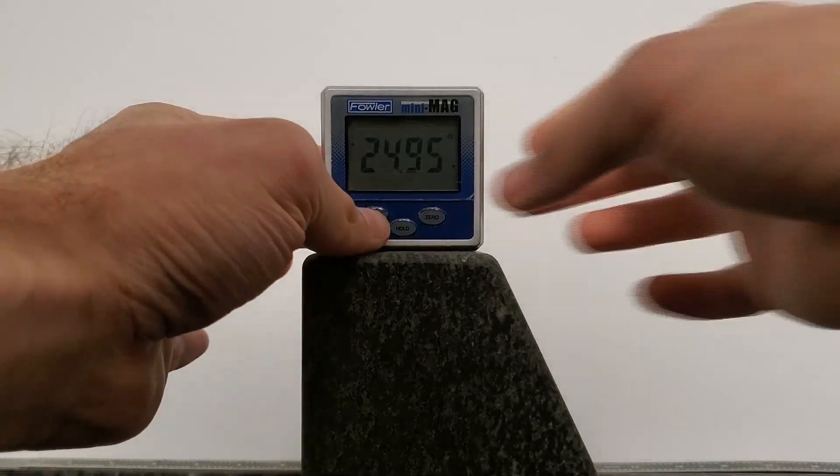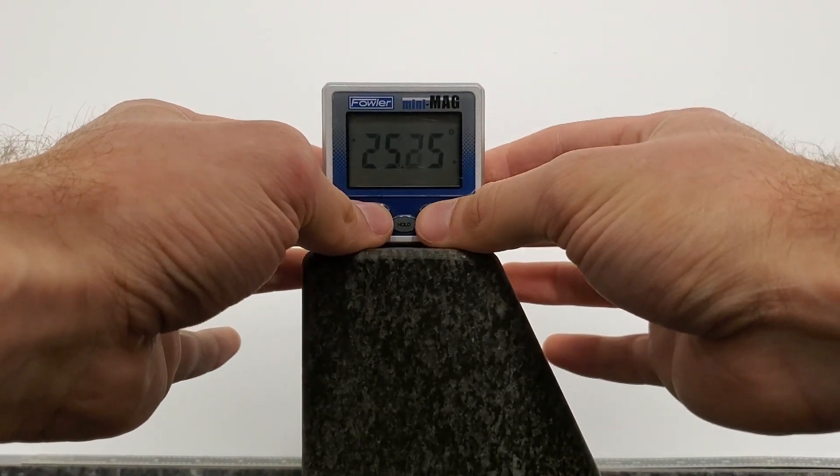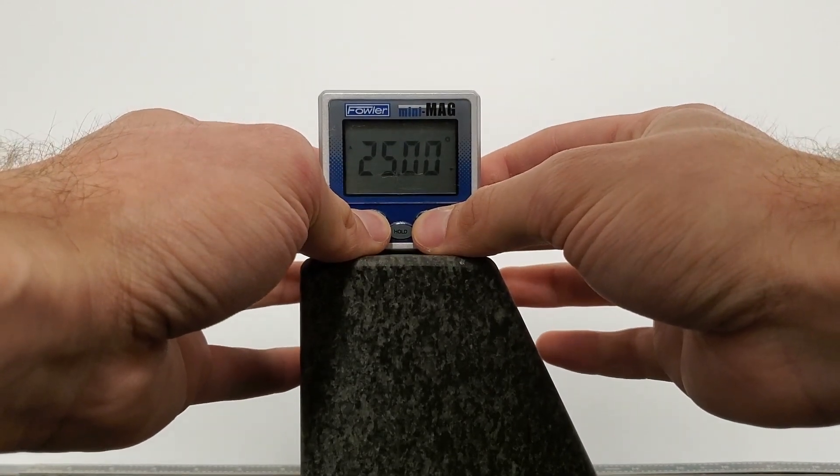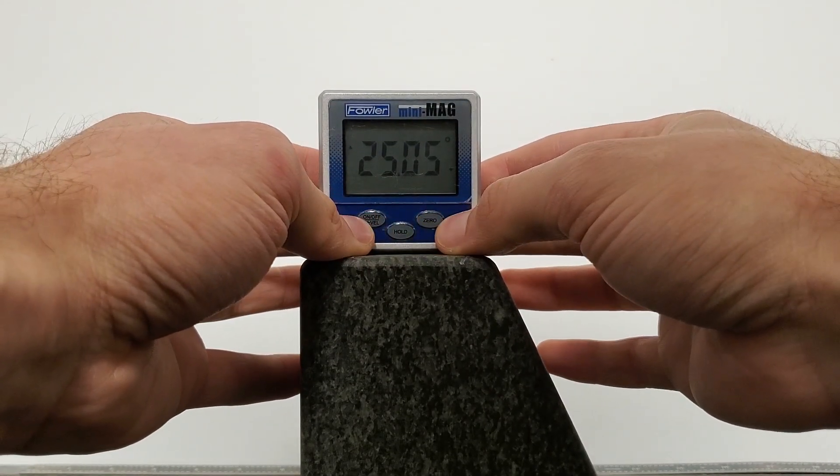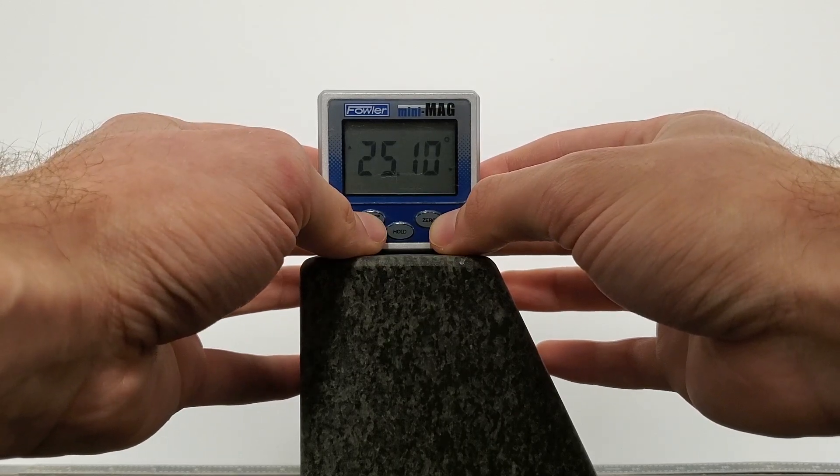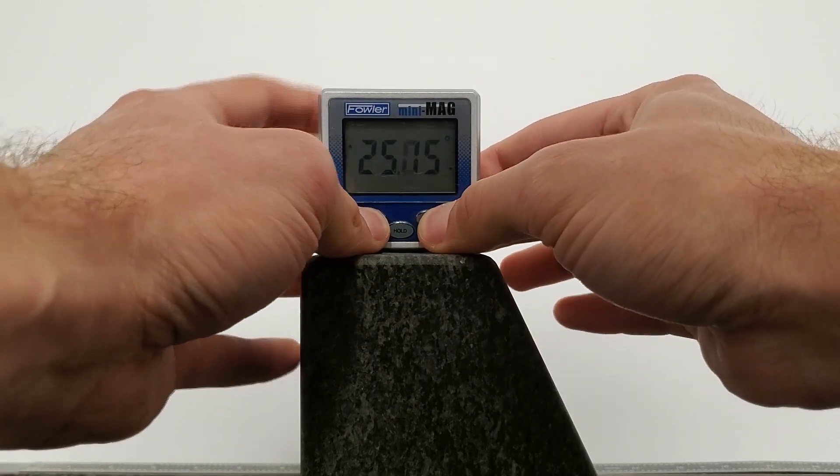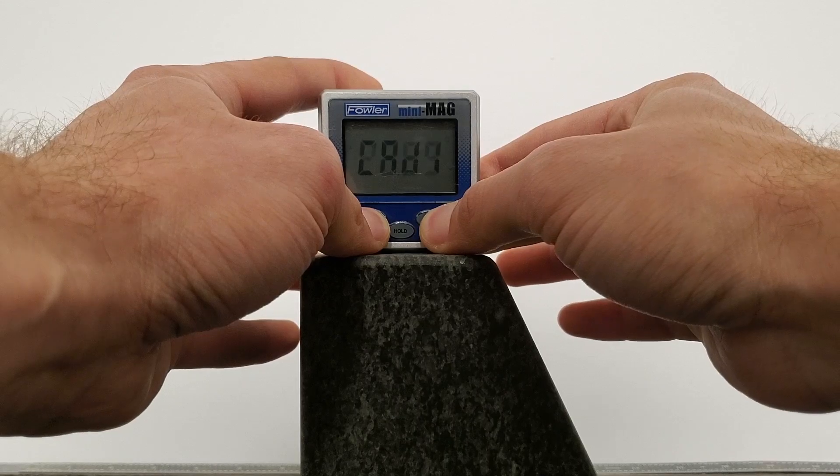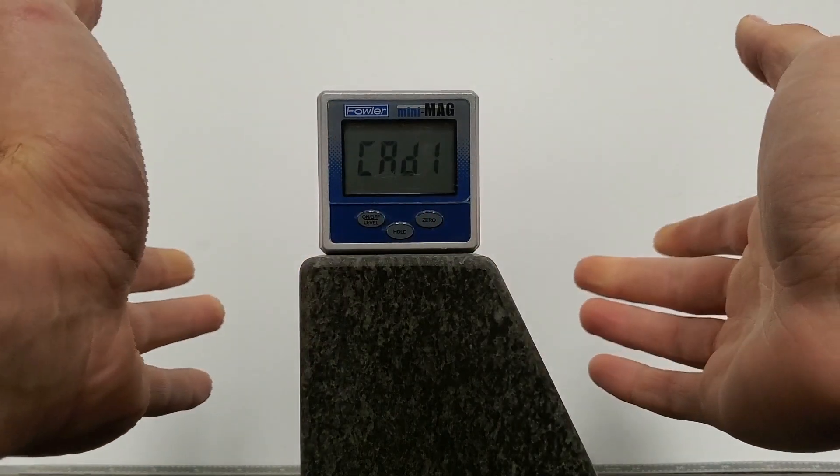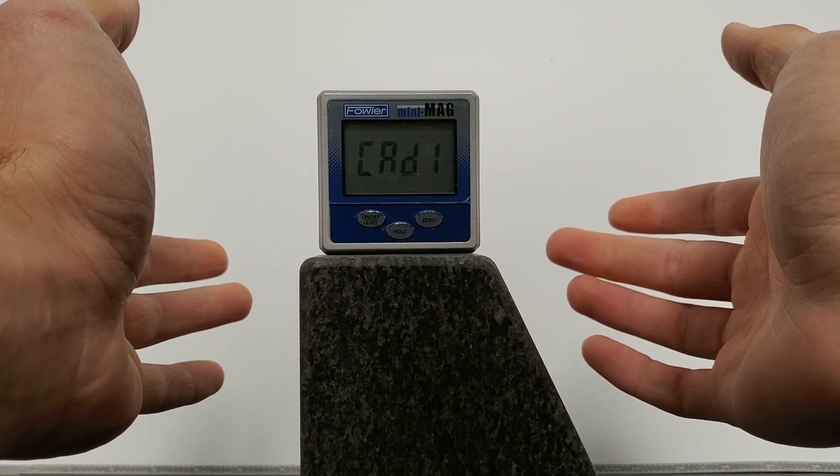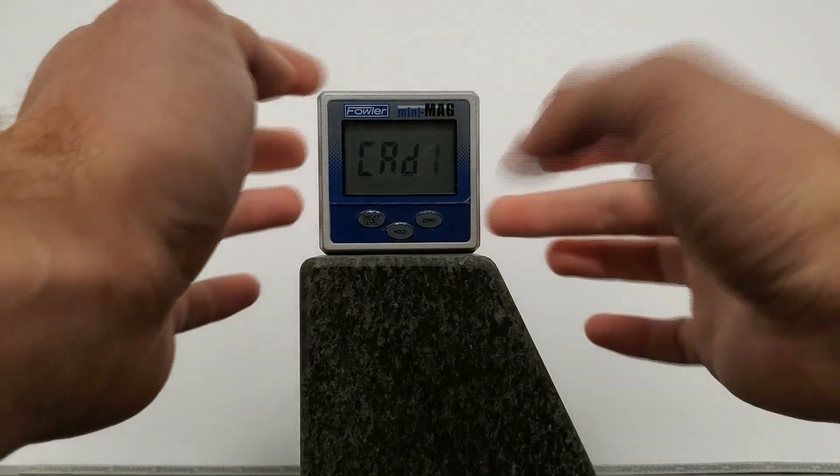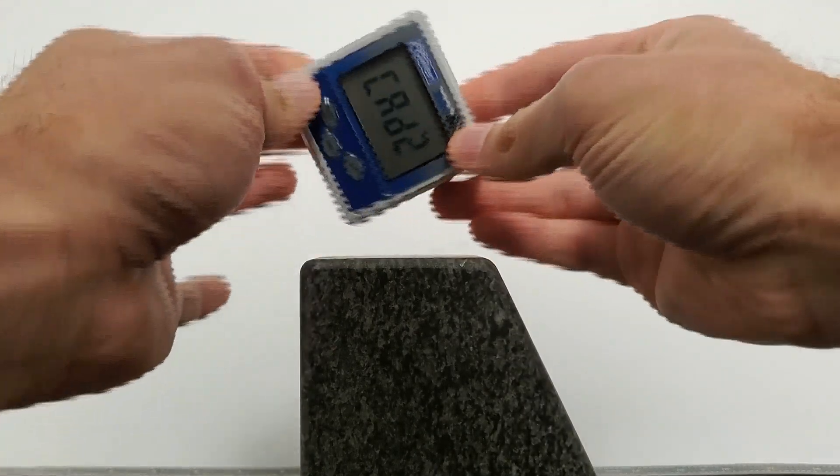Or you can take the calibrated zero off of a known level surface. To do that, hold down both the zero button on the right and the power switch on the left for a few seconds until it says CAL 1. Give it a second until 1 starts blinking, hit zero, and flip it.